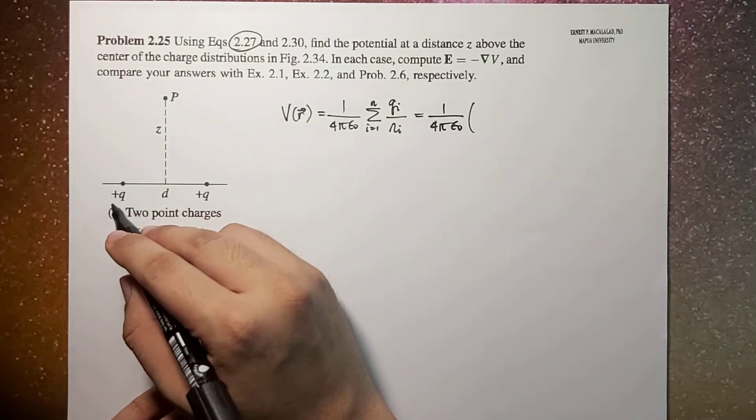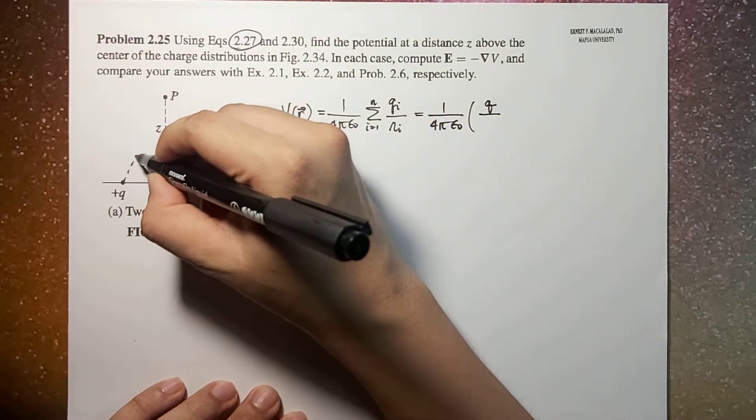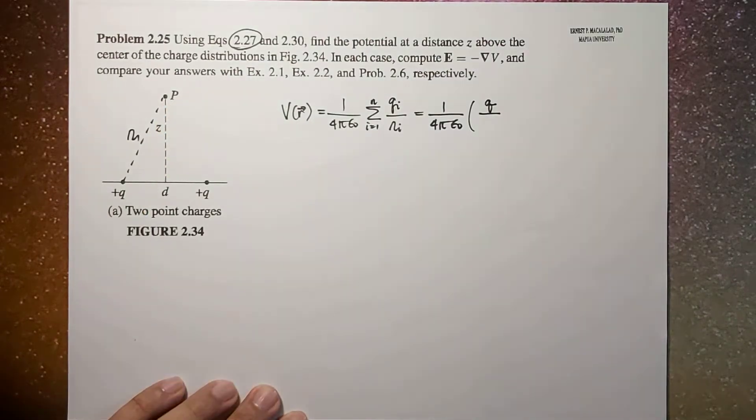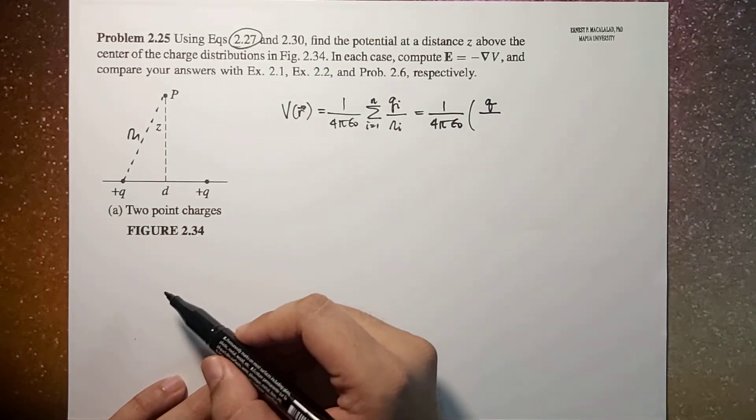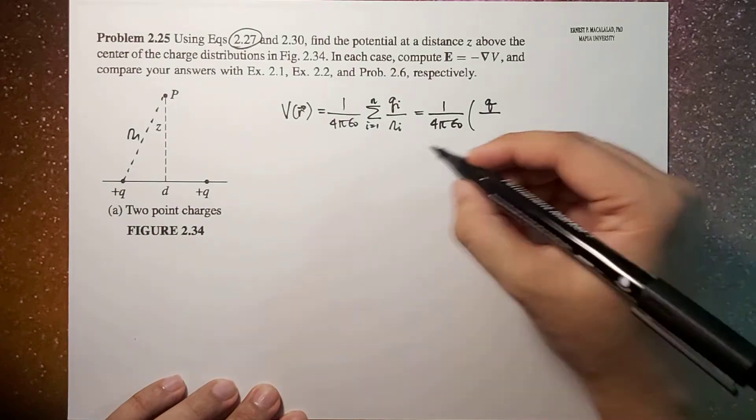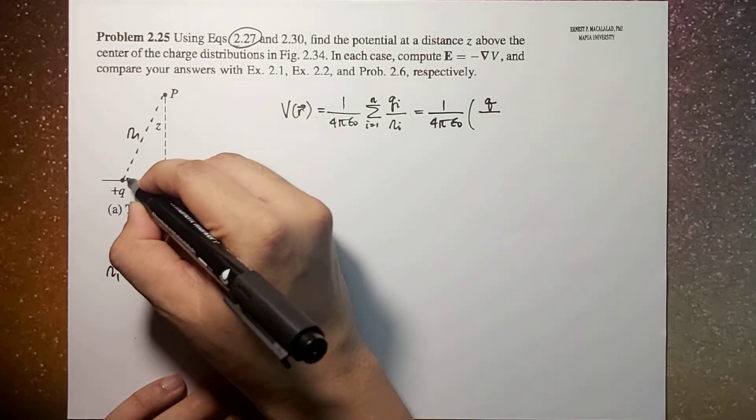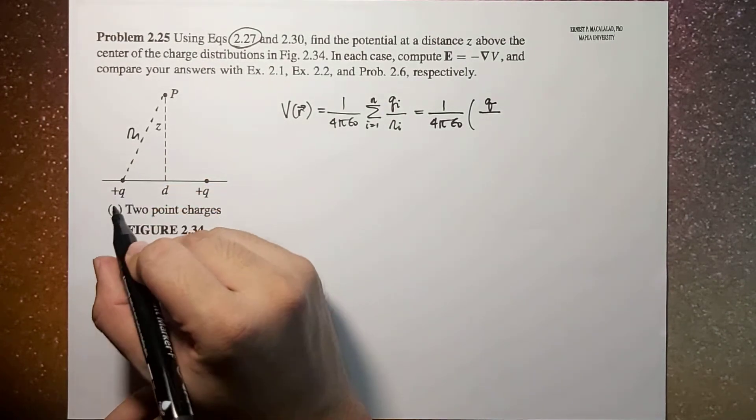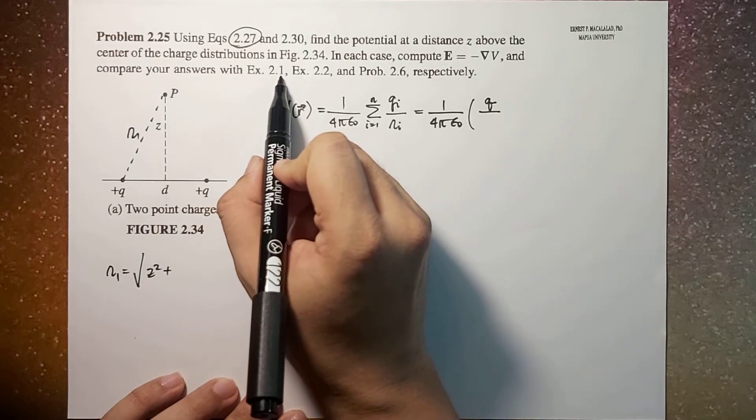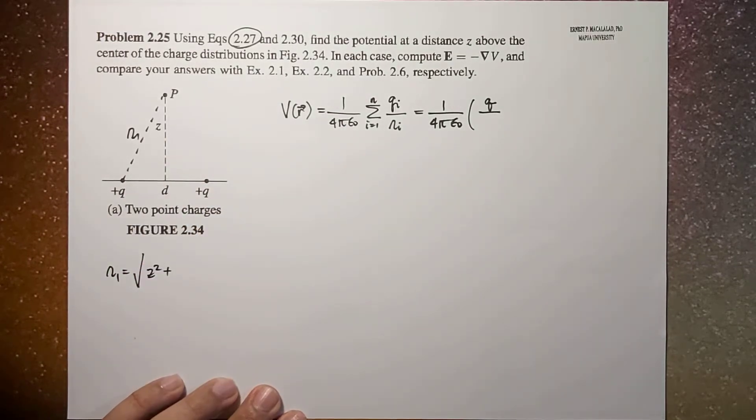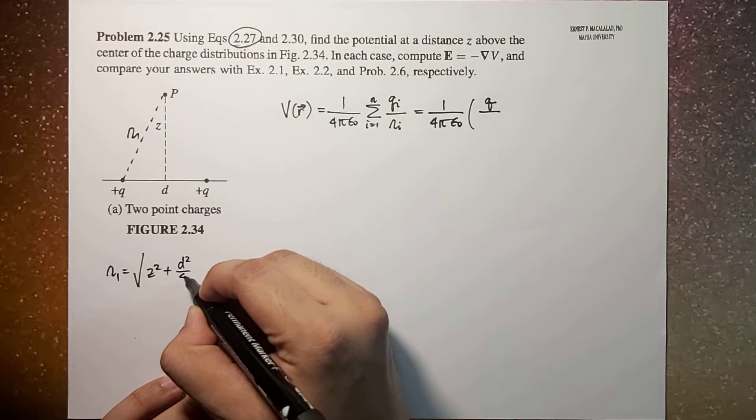So this will be Q over R1. R1 would be this length, which is equal to square root of Z squared plus this length - this D would be the distance between the two charges, as in example 2.1. So that means this distance is D over 2. So R1 would be equal to square root of Z squared plus D squared over 4.